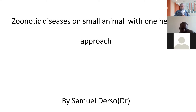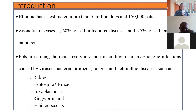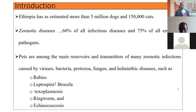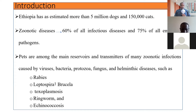This presentation is on zoonotic diseases in small animals with a One Health approach. As an introduction, looking at the number of dogs and cats in Ethiopia, we have around 5 million dogs and 150,000 cats. Normally in Ethiopia, we keep these animals for different purposes, and keeping such animals may have a role especially for zoonotic diseases.